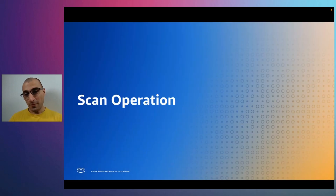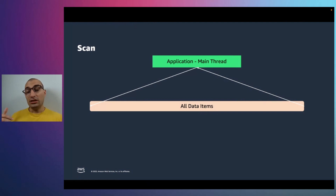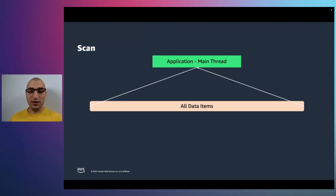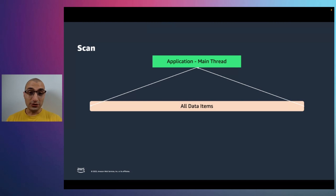On the other side, the scan operation will allow you to get all the information from your table. When you issue the scan API, DynamoDB will return all the data available in your table. Since we might be talking about millions of items, you may need to paginate across the results returned by the API call, and then your application will need to process that data. You can specify filter conditions — for example, contains, greater than, or if some parameter exists — and DynamoDB will only return the data that matches your condition. However, you still pay for the full read.